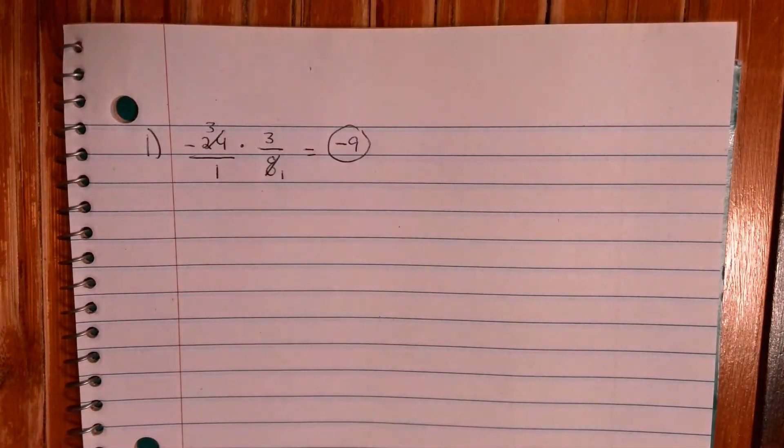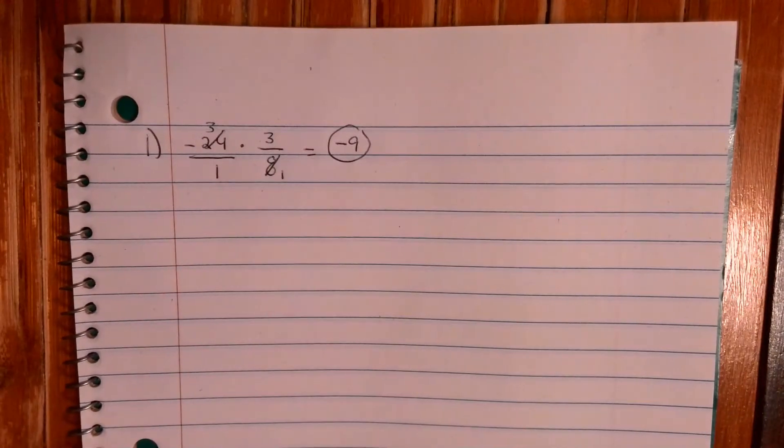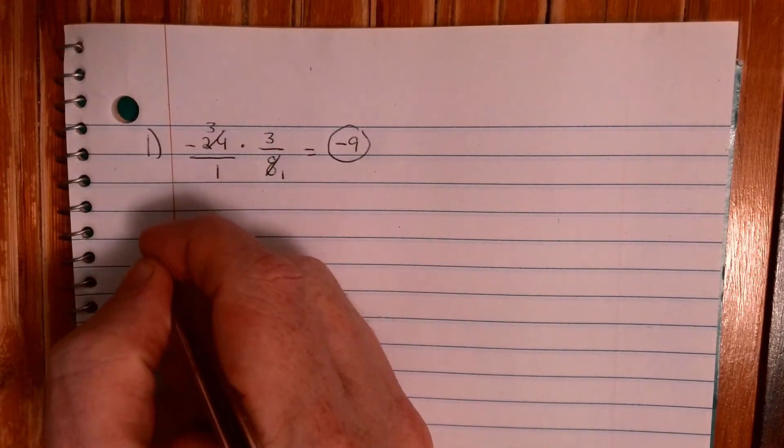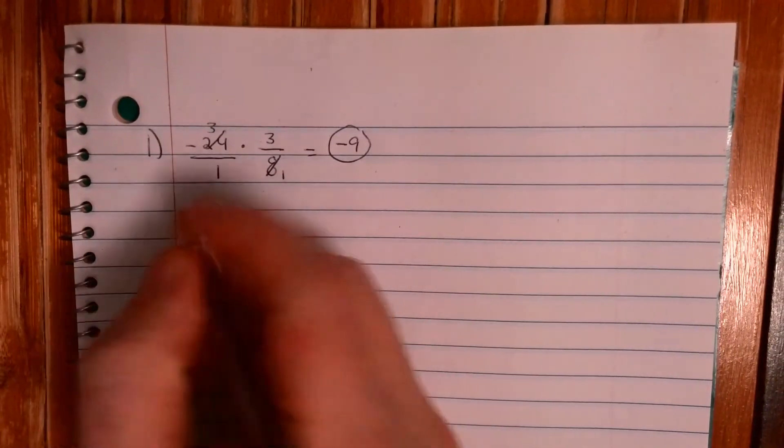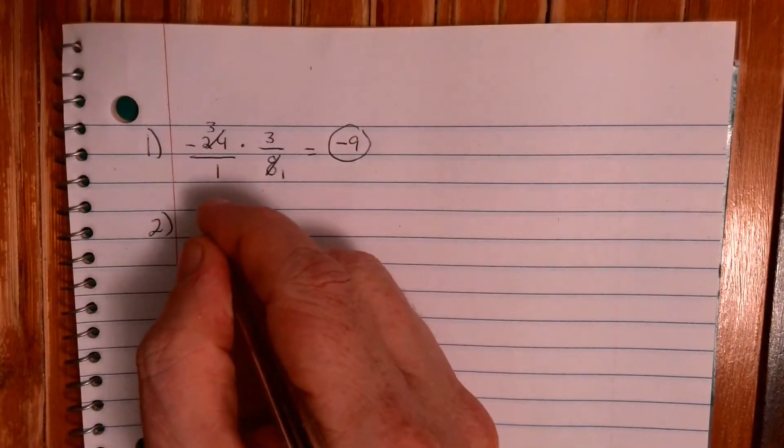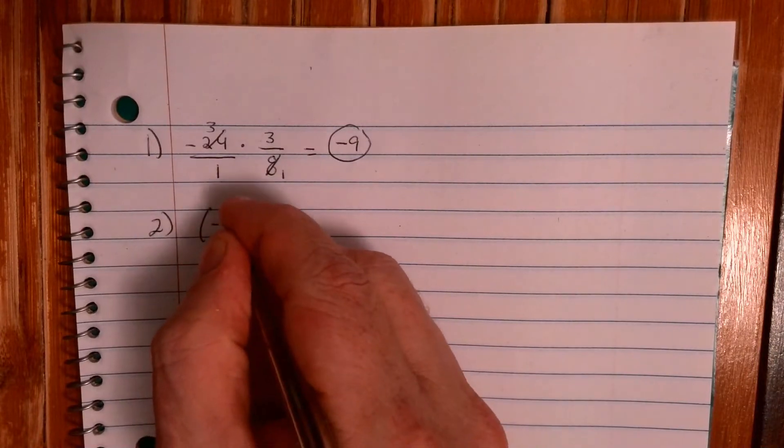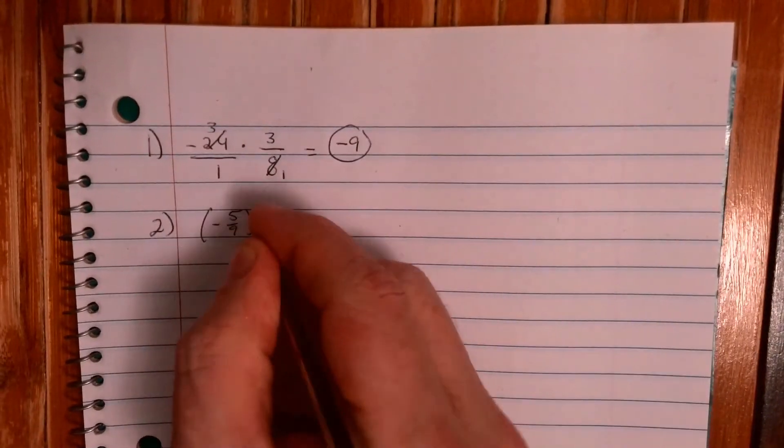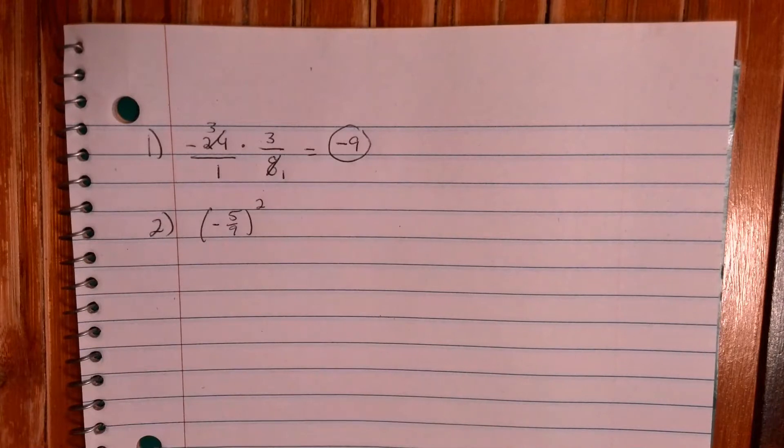Number two, let's just go here, see if we can squeeze as much here on one page. Number two, you do see some fractions raised to an exponent, so we have like negative five-ninths raised to the second power.